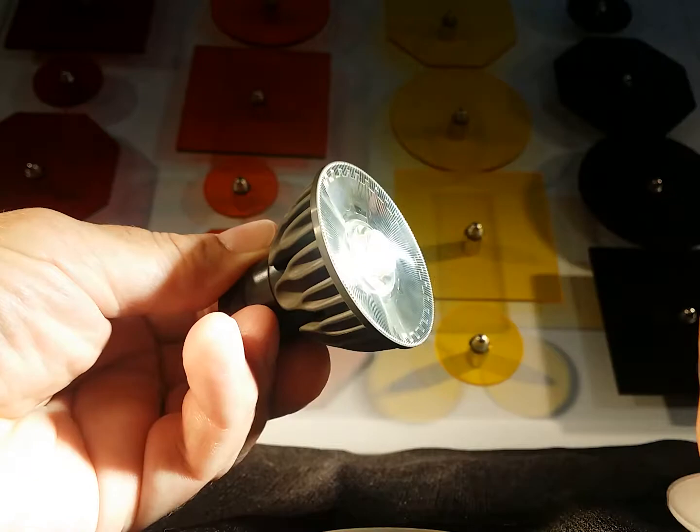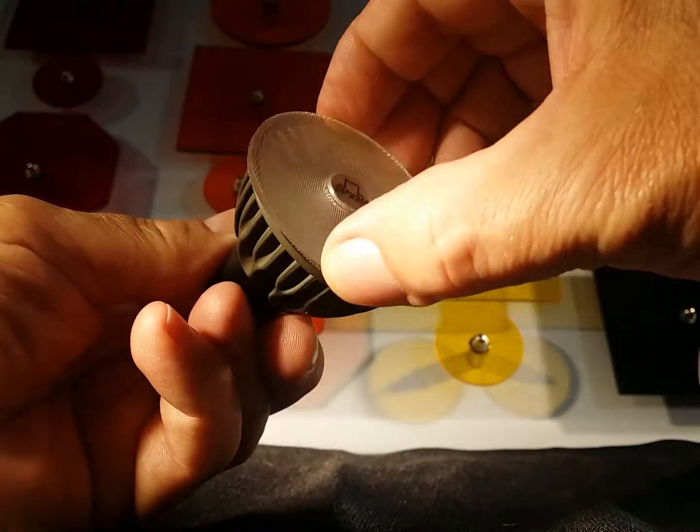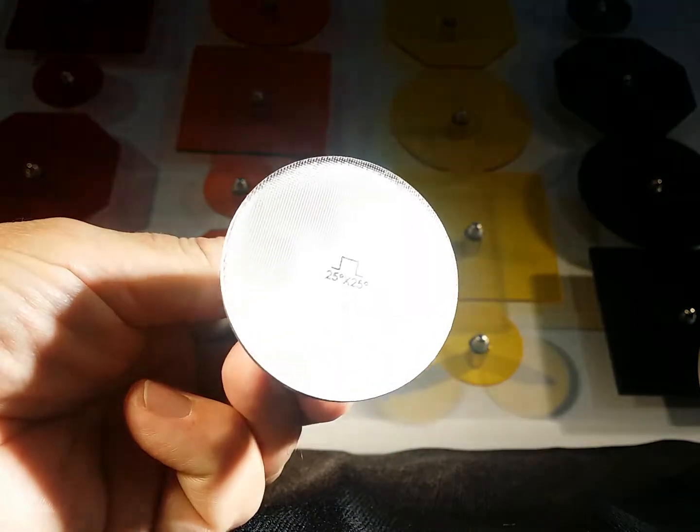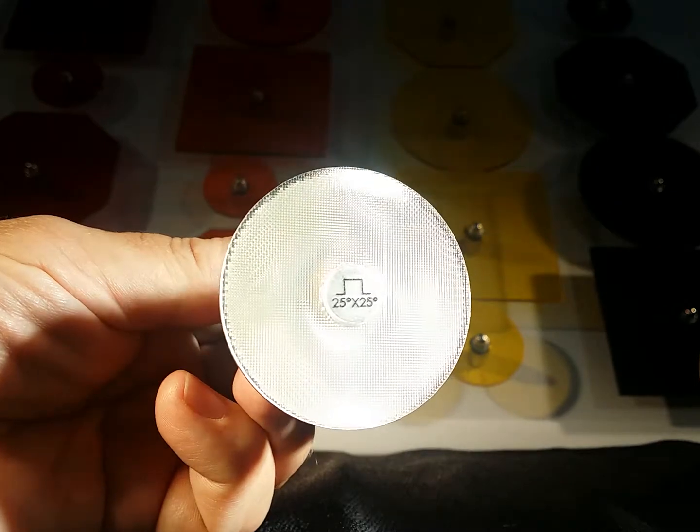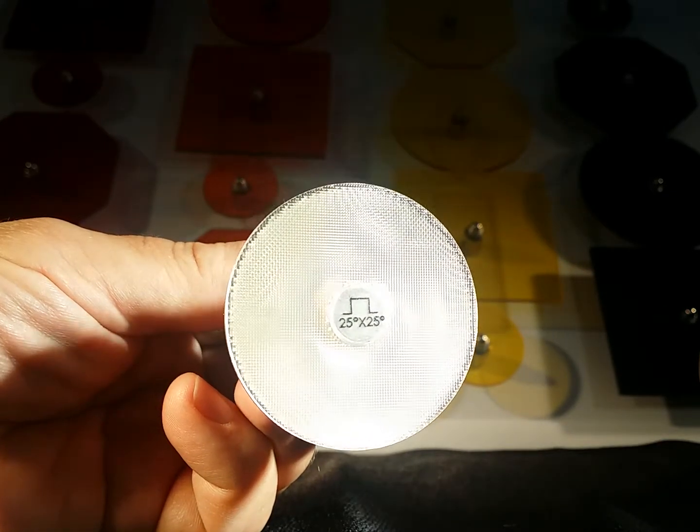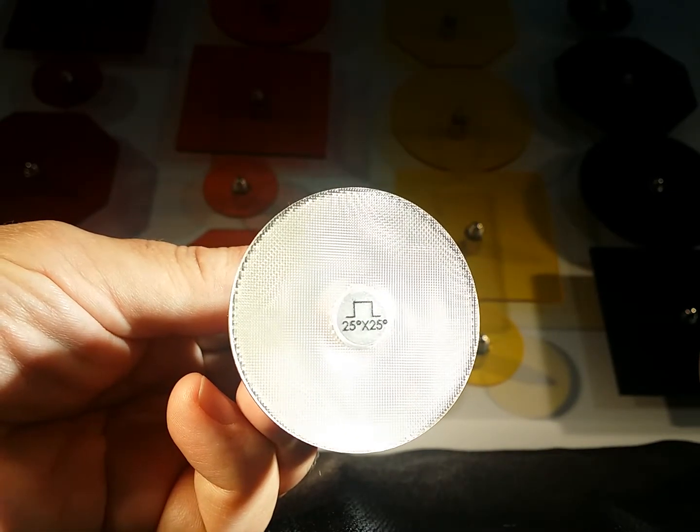You could change the beam shape by just putting on a beam shaper. Now it has a square instead of a nice circular round. It's a square, 25 by 25 degrees.